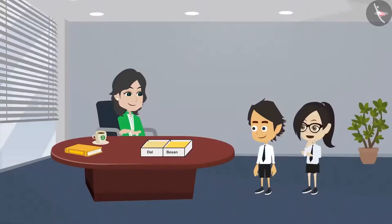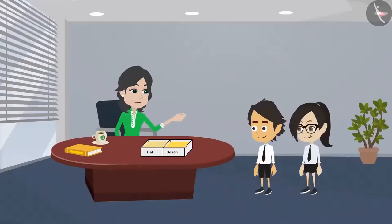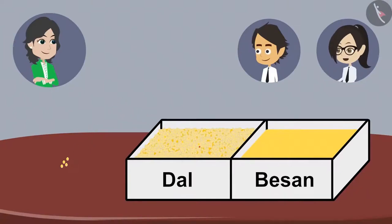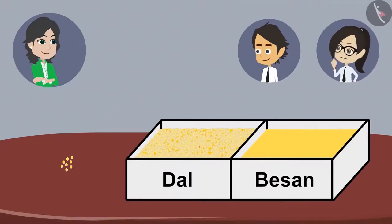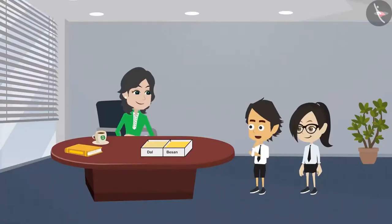We can divide dal into two parts because we can count dal. Okay, please try. I will start counting from this pile of dal. One, two, three, four, five, six, seven, eight. This pile is huge — by the time I finish, it will be late in the evening. This is not the right way to measure dal. This means this is not the right way to divide dal into two equal halves.